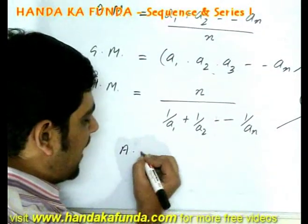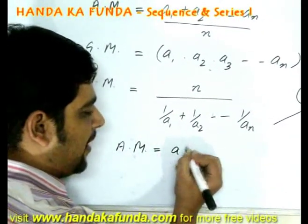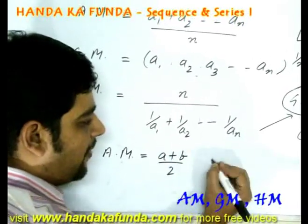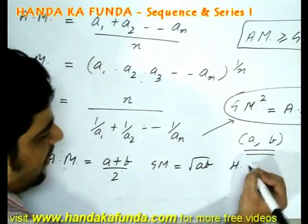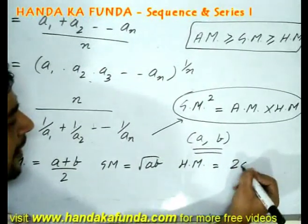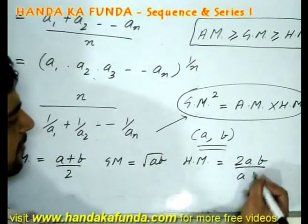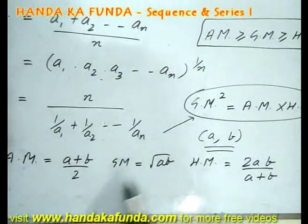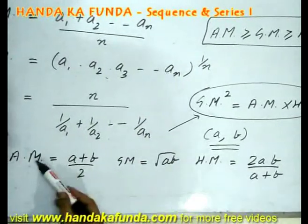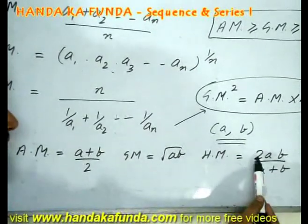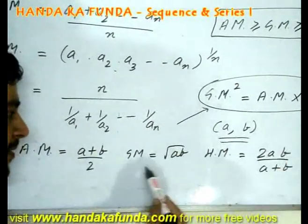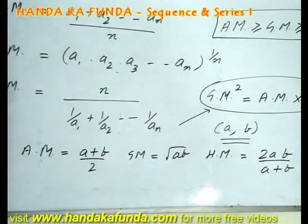The arithmetic mean of two values is given by A plus B by 2. The geometric mean is given by root AB and the harmonic mean is given by 2AB by A plus B. As you can see for yourself here, A plus B, if I multiply AM and HM, A plus B and A plus B will cancel, 2 and 2 will cancel, and I will be left with just AB which is nothing else but the geometric mean whole square.